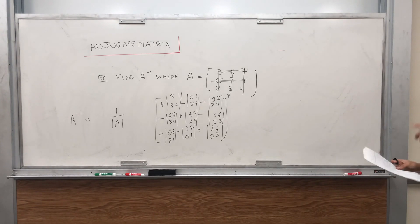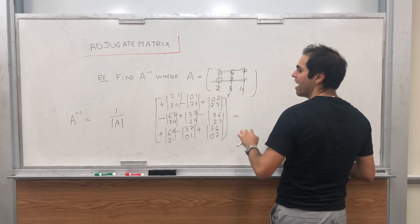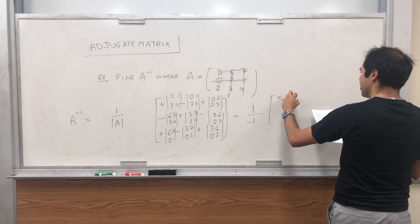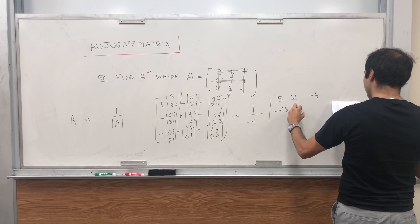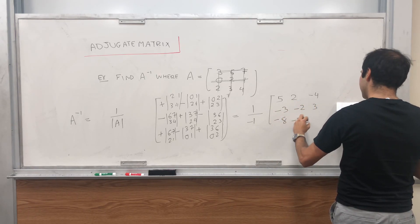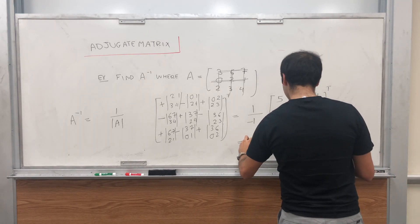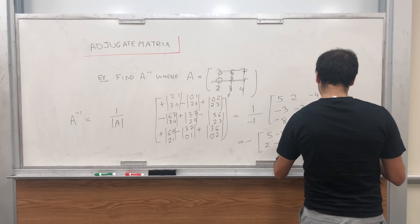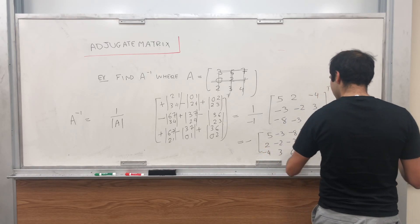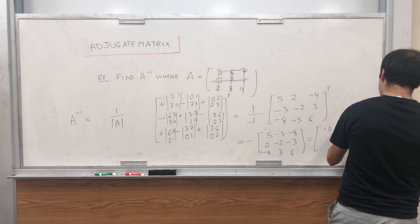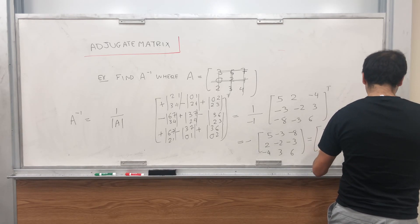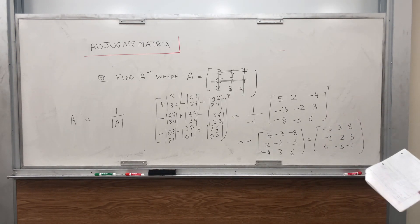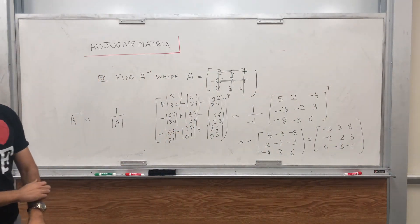Once you compute everything, the determinant of A turns out to be minus 1, and all those little mini Bombermans (2×2 determinants) give us 2, 5, 2; −4, −3, −2; 3, −8, −3, then 6. You transpose that matrix to get −2, −2, −3; −2, −2, −3; −4, 3, 6, which becomes −5, 3, 8; −2, 2, 3; 4, −3, −6 after dividing by −1. There you have the inverse.